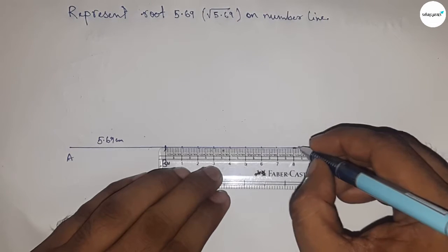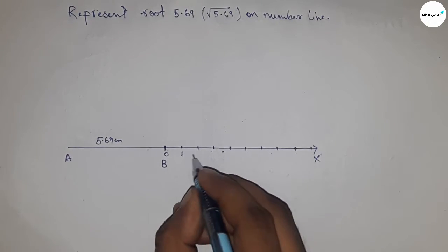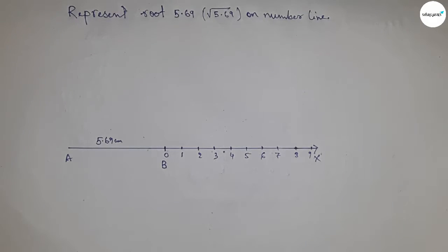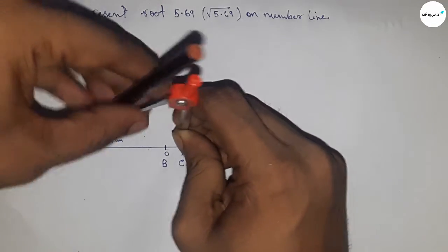So 0, 1, 2, 3, 4, 5, 6, 7, 8, 9, 10, and taking this is C point. Next, having to bisect the line AC, so taking greater than half of AC and drawing arcs by this way.